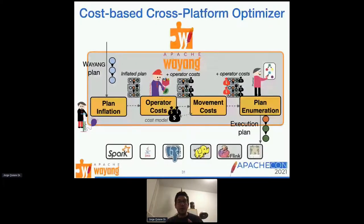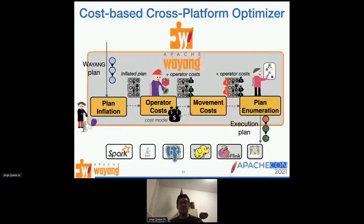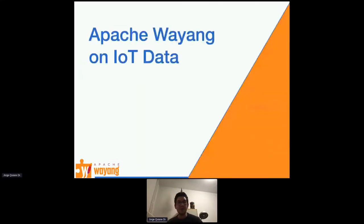All of this is customizable. If you see that a conversion or data movement operator is suboptimal, you can provide one that suits your workload best without changing anything in the core of Wayang — you provide it as a new operator with mappings and Wayang can use it during optimization.